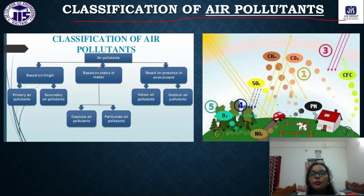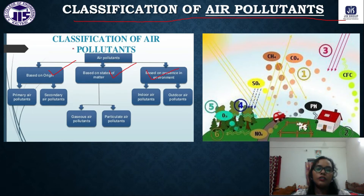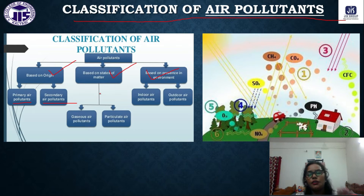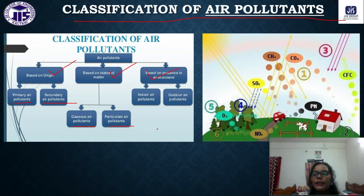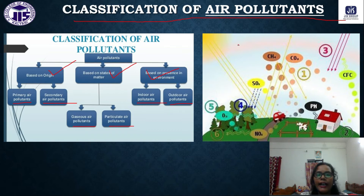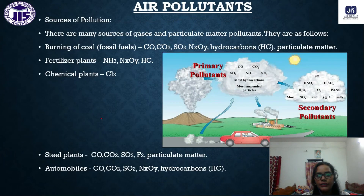Air pollutants are classified in three ways: based on origin — primary and secondary pollutants; based on state of matter — gaseous air pollutants and particulate matter; and based on presence in environment — indoor and outdoor air pollutants.